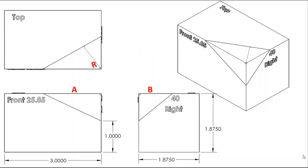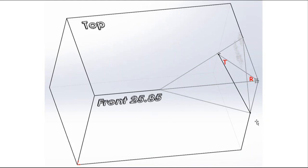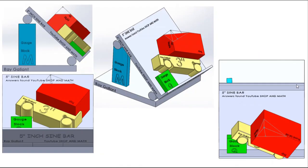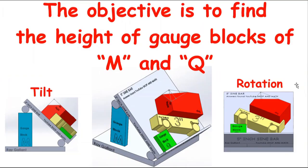So what we have here is basically all the dimensions. We have two angles and a height. What we want to find in this case is our rotation angle first, and then we'll find our tilt. So here's going to be our tilt angle, and this angle here is going to be our rotation angle. Our setup will look like this. Now keep in mind your setup may look differently depending on the type of equipment you're going to use. The objective of this exercise is to find the gauge block height of M and Q.